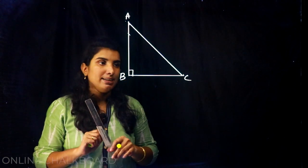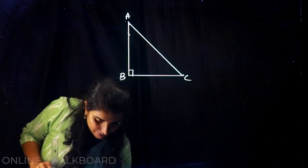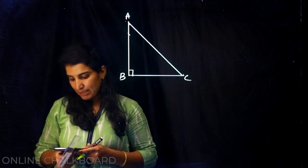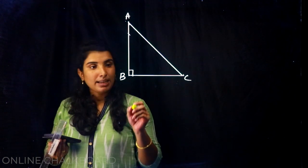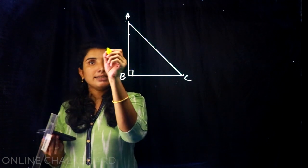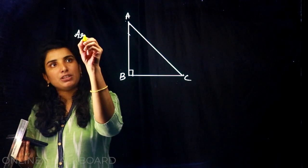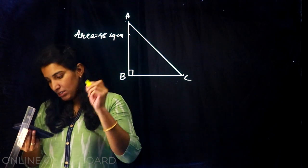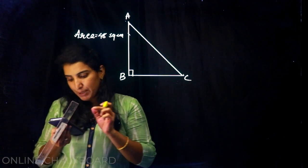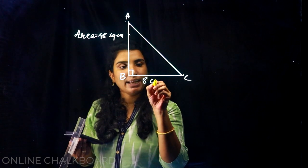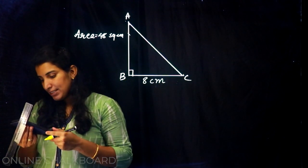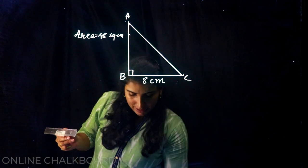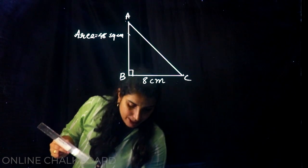Where A, B is right. Its area is 48 square centimeters. The length of BC is 8 centimeters.